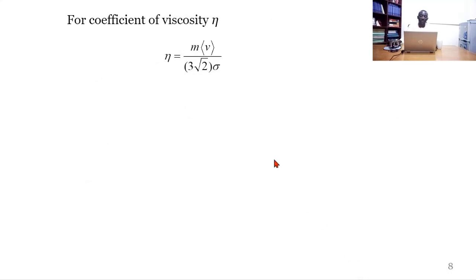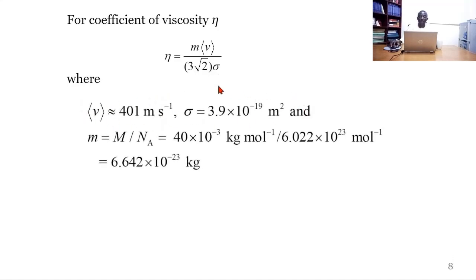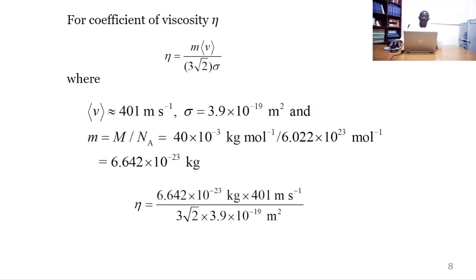For the coefficient of viscosity, we have the mass of the gas times the mean speed divided by 3 times 2 times the collision cross-section. The mass is the molar mass in SI units, kilograms per mole, divided by Avogadro's constant, 6.022 times 10 to the power of 23 per mole, which evaluates to 6.642 times 10 to the power of negative 23 kilograms. Substituting all parameters into the formula, the expression evaluates to 1.6 times 10 to the power of negative 3 kilograms per meter per second.